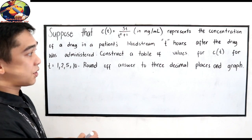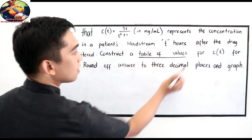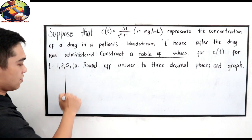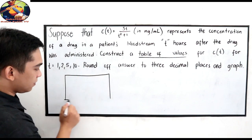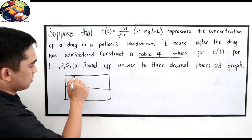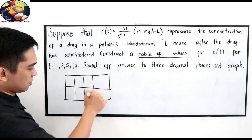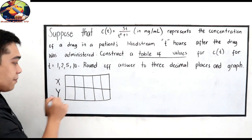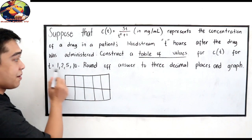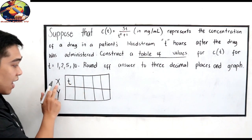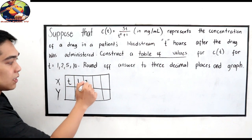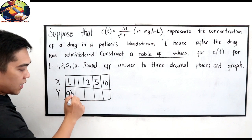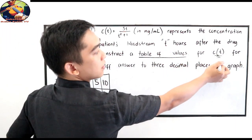Mag-represent tayo ng table of values gamit ang ating time na 1, 2, 5, 10. Gawa tayo ng table of values natin. Alam natin ito si x and si y, pero may given tayo na time which is considered as the t. Siya si x natin. Ang t natin ay 1, 2, 5, 10.